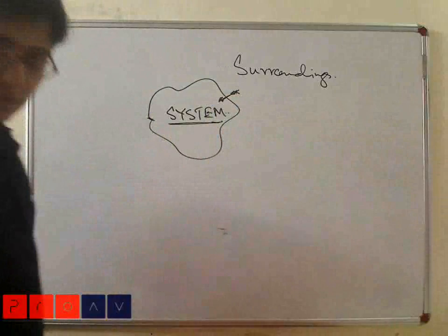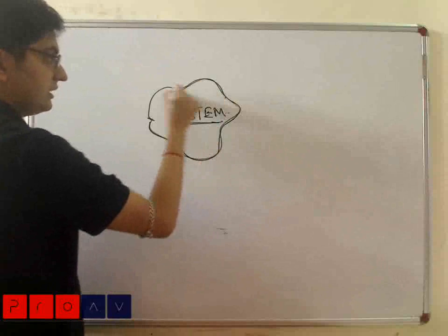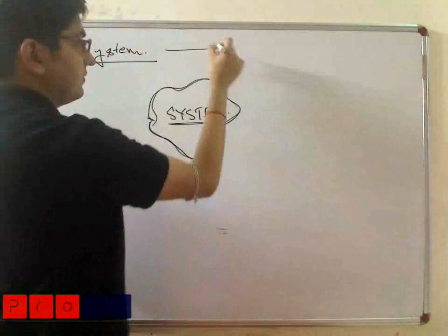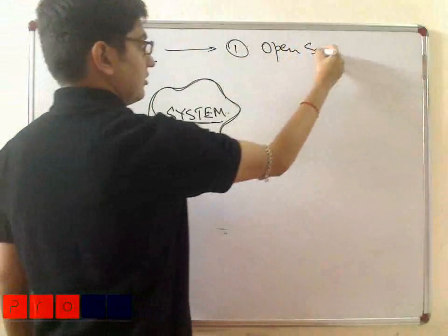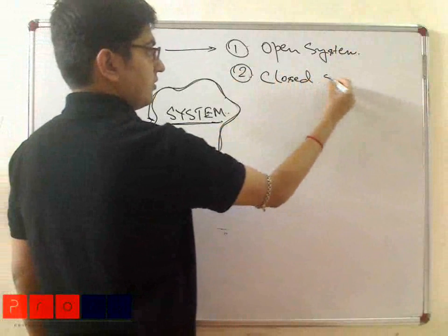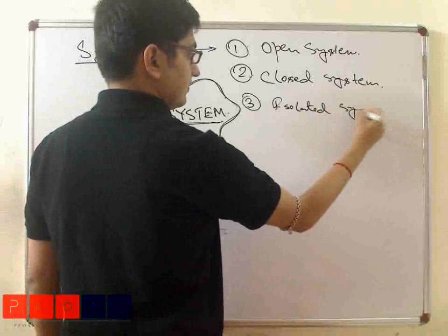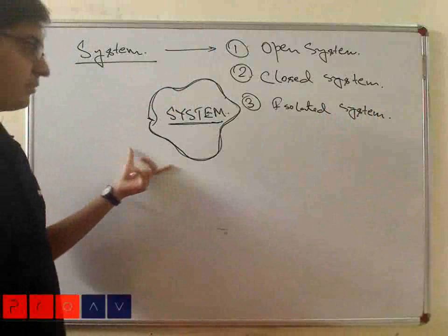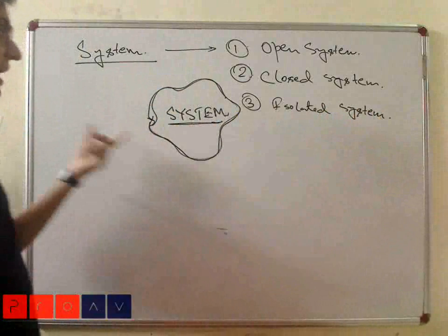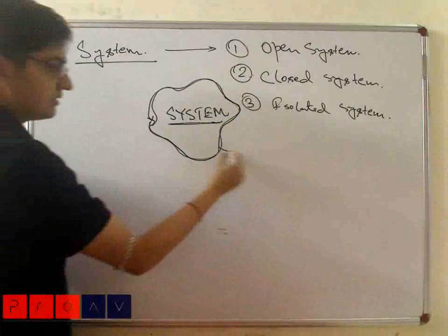In a system, there are three kinds. This interface between system and surroundings is known as the system boundary. The system is of three kinds: first is open system, second is closed system, and third is isolated system. We model any thermal equipment as system and surroundings, and the interface between them is known as boundary.